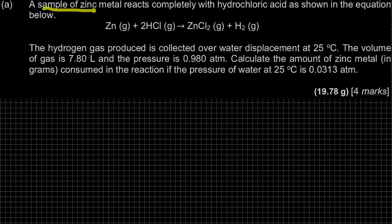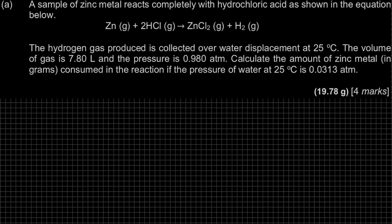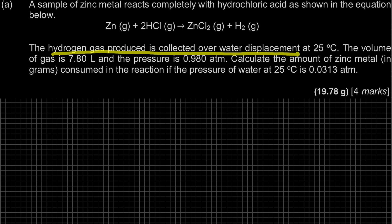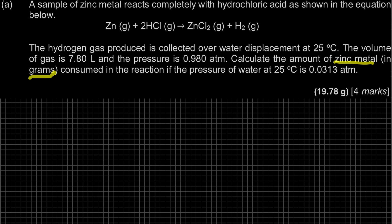Question A: A sample of zinc metal reacts completely with hydrochloric acid. Zinc reacts with HCl to form zinc chloride and hydrogen gas. The hydrogen gas produced is collected over water displacement at 25 degrees Celsius. The volume of gas is 7.8 liters and the pressure is 0.98 atm.